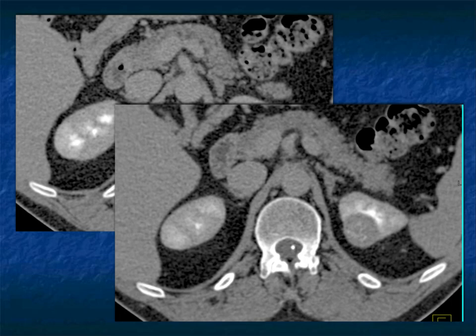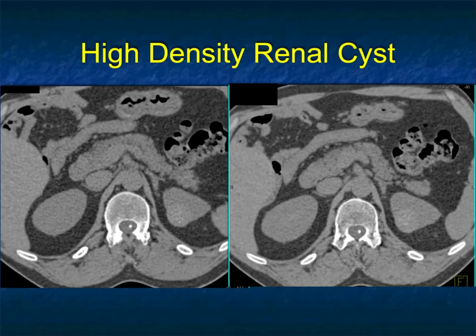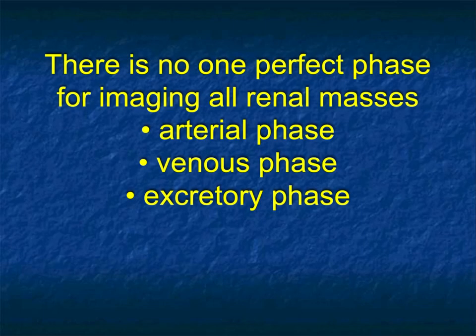We got a non-contrast scan to confirm it, and it proved it. The rule is: anything above 70 Hounsfield units, well-defined, is going to be a high-density renal cyst. Under 20 is typically a simple cyst. The 20–70 range is the concern zone. The average renal cell carcinoma on non-contrast CT measures 37 Hounsfield units. There is no one perfect phase for all renal masses — they are very variable.